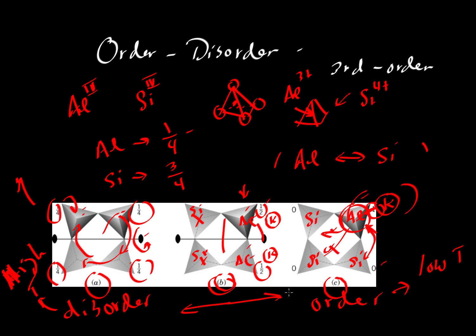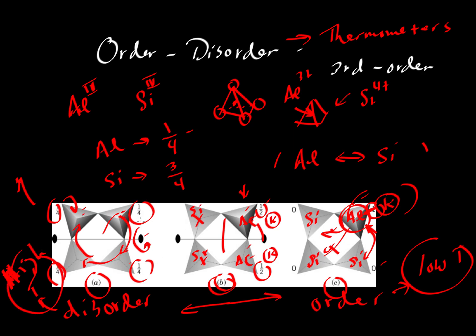That's the case of order-disorder. Probably the single biggest application is that these are very important as thermometers. We can use order-disorder relationships in various kinds of phases to tell whether we have high-temperature or low-temperature systems. It's not just a category — we have a continuum of order from high to low, making it a continuous thermometer that tells us how hot or cold a certain geological system was.